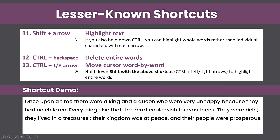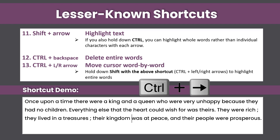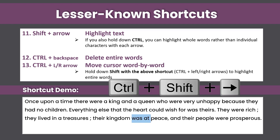The next lesser-known shortcut is Ctrl plus the left or right arrow, and that will move the cursor word by word. If you hold down Ctrl and press the right or left arrow, you can see the cursor moves word by word. And as I showed before, if you also hold down Shift, you can highlight those entire words.